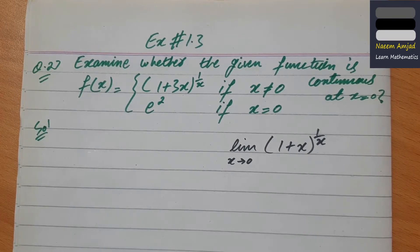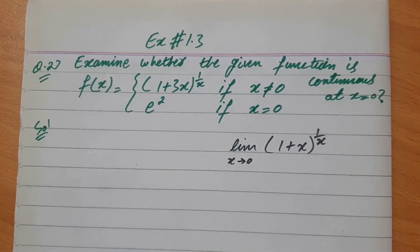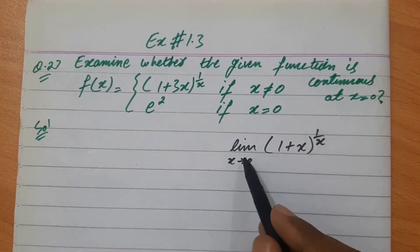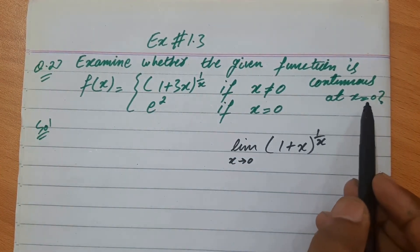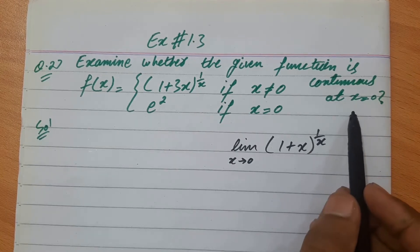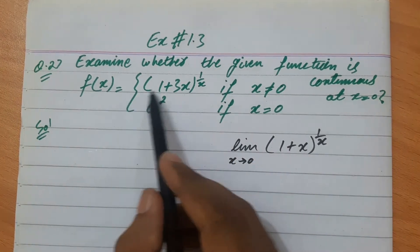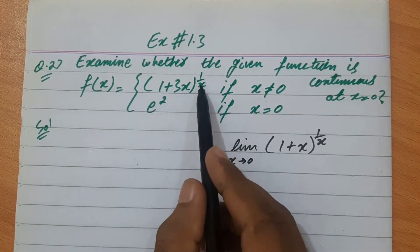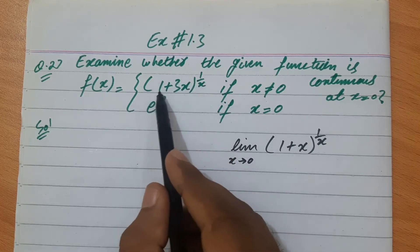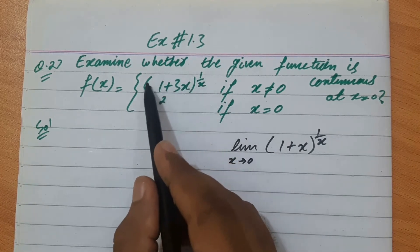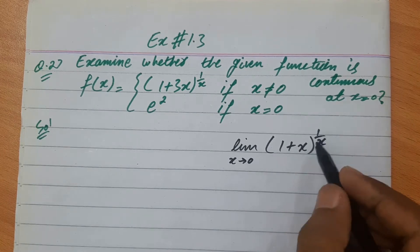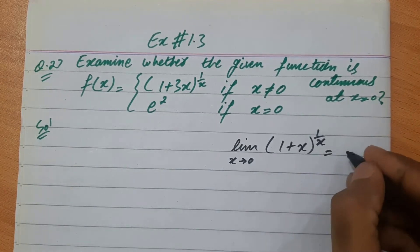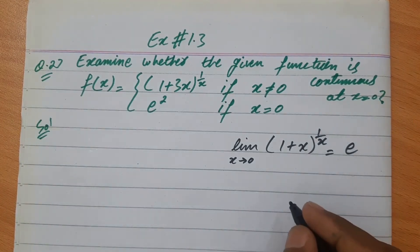Assalamu alaikum — Calculus with Analytic Geometry, Chapter 1, Exercise 1.3, Question 27. Is मैं यह examine करना है कि दी गई function x=0 पर continuous है या नहीं। इस function में 1 plus 3x whole power 1 over x है। हमें पता है कि limit x→0, (1+x)^(1/x) = e होता है।